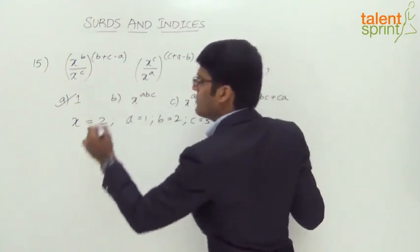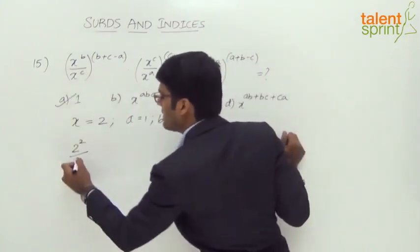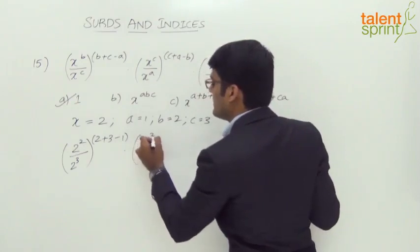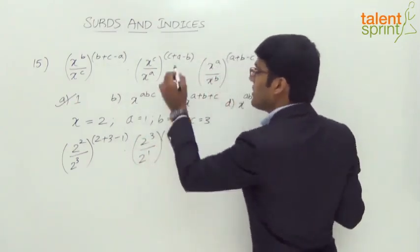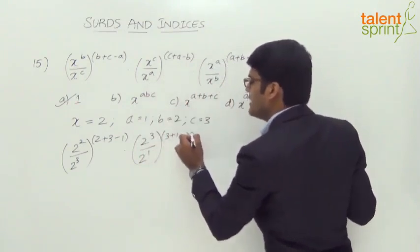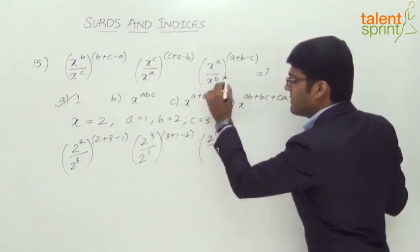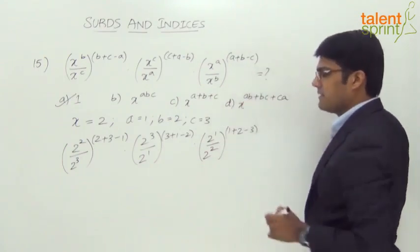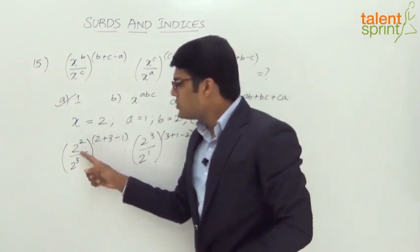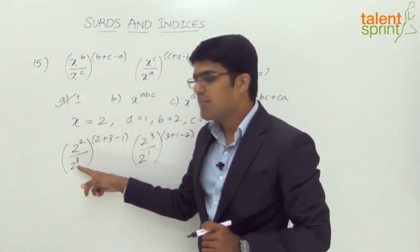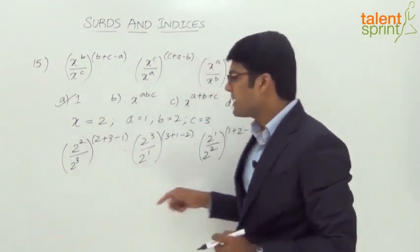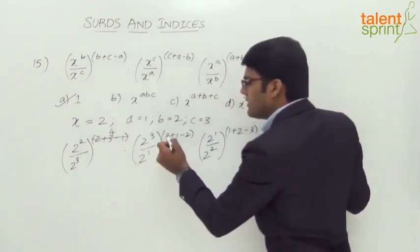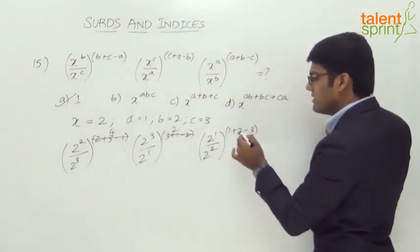Substituting: 2^2 ÷ 2^3 whole to the power of (2+3−1)=4, gives 2^(−1) to the power 4. Then 2^3 ÷ 2^1 whole to the power of (3+1−2)=2, gives 2^2 to the power 2. Then 2^1 ÷ 2^2 whole to the power of (1+2−3)=0. Simplifying: 2^(−1) raised to 4 is 2^(−4); 2^2 raised to 2 is 2^4; and the last term has power 0.